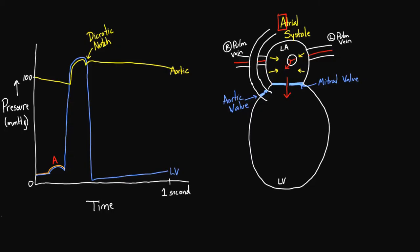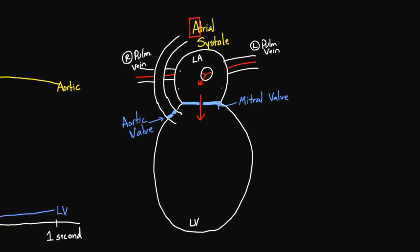Then the ventricular contraction begins — the ventricle has a huge contraction, building up enormous pressure. This causes the mitral valve to suddenly close. The pressure in the left ventricle is so high that the mitral valve is forced shut, cutting off the flow between the atrium and ventricle.